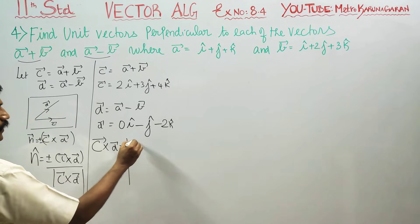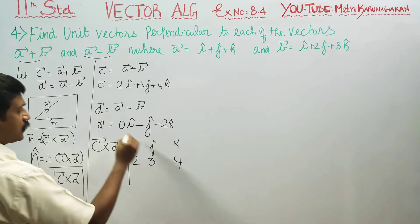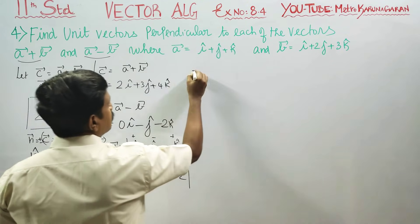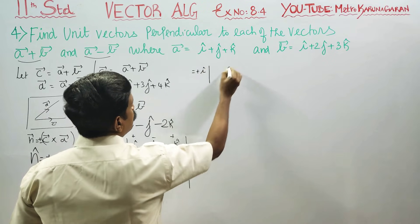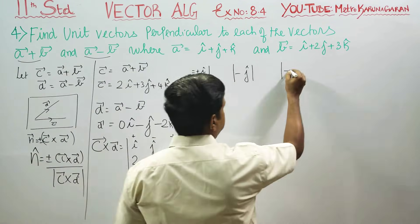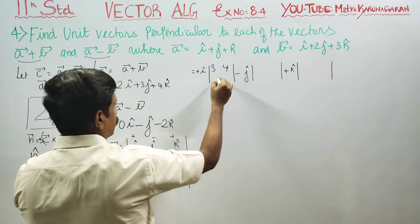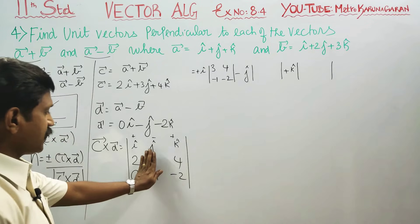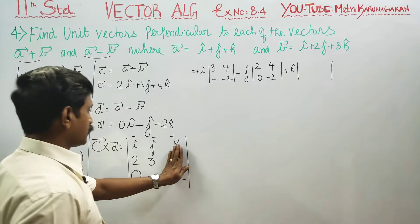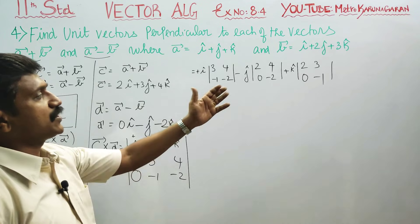To find c cross d, we set up the determinant with i, j, k vectors. The components of c are 2, 3, 4, and the components of d are 0, minus 1, minus 2. Expanding along the top row with plus, minus, plus signs: i-cap times the 2x2 minor of the j and k rows, minus j-cap times the minor, plus k-cap times the minor.